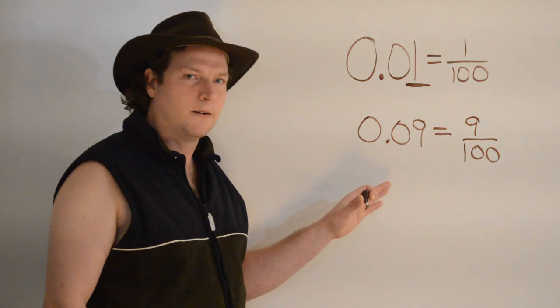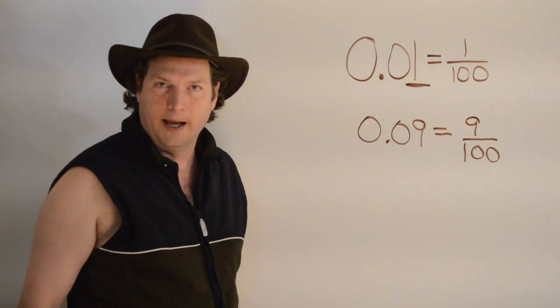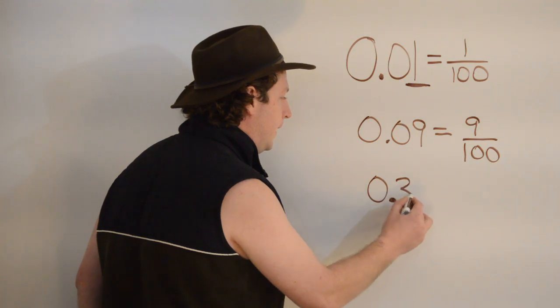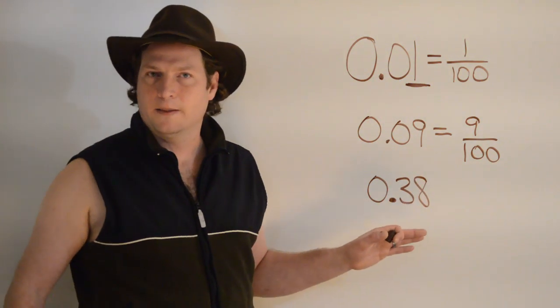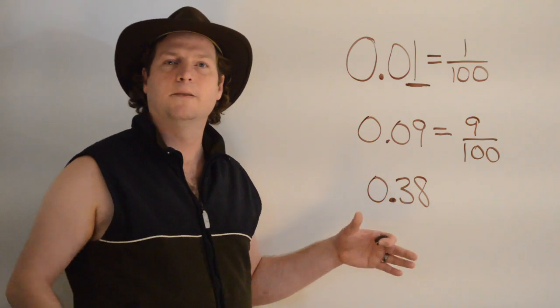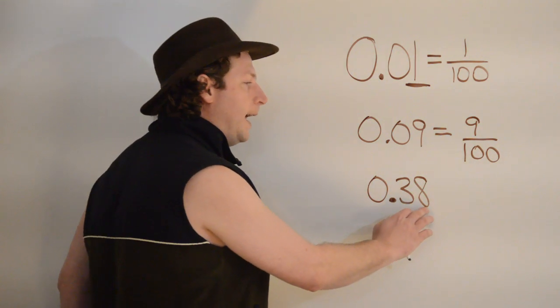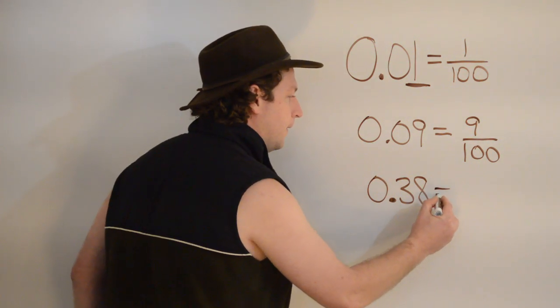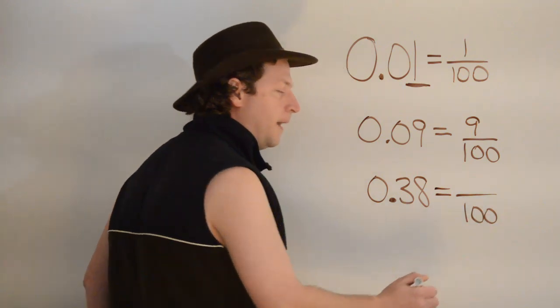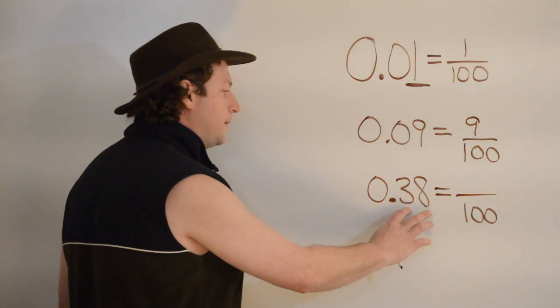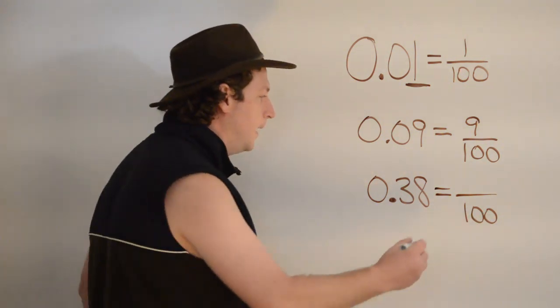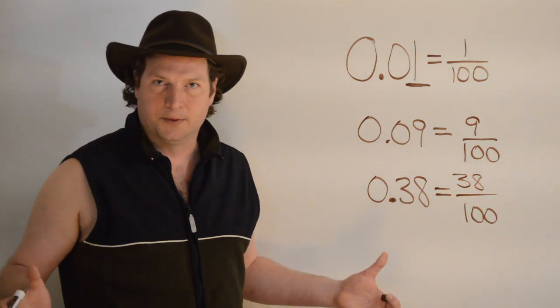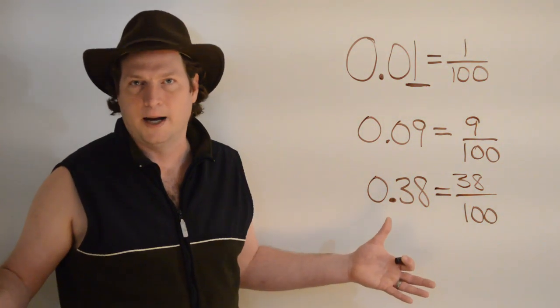Now, this works and is a little complicated because we can also have a number in the tenths place. So, let's look at zero point three eight. Zero point three eight can be easily written as a fraction. We will use the last number and that place value as the denominator, which is one hundred. And now, we put both the tenths and the hundredths place on top. And that equals thirty-eight over one hundred. You can always reduce from there if possible.